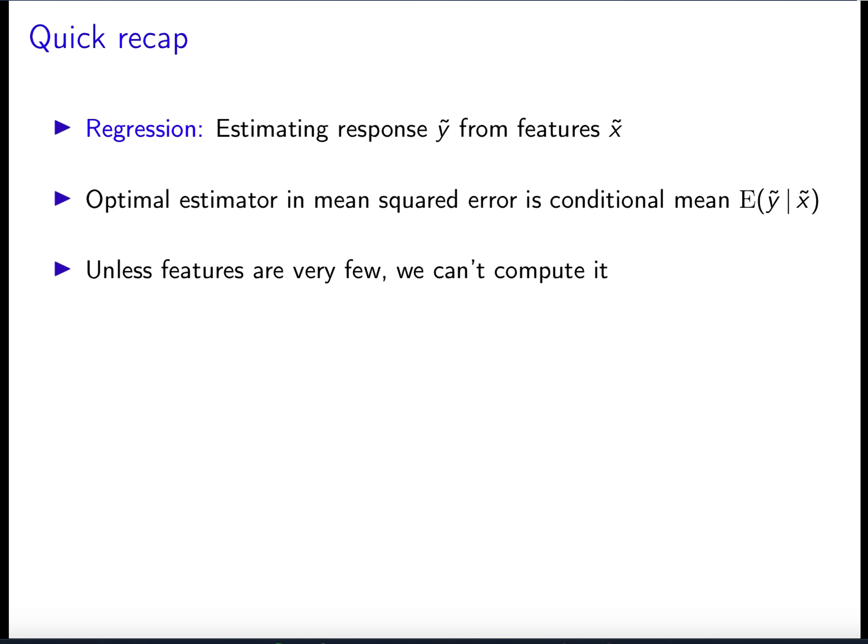When the features are more than a few, it becomes computationally intractable because you need unfeasibly large volumes of data to estimate this. This is basically the curse of dimensionality. Because of that, we need additional constraints on our models, and making the models linear makes them quite interpretable and is often very effective in practice. So that's what we're going to talk about: linear models for regression.